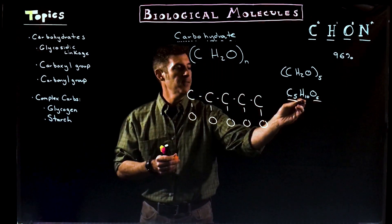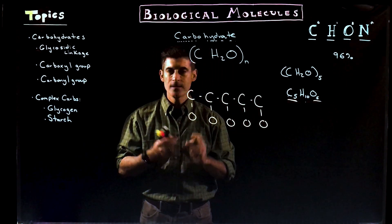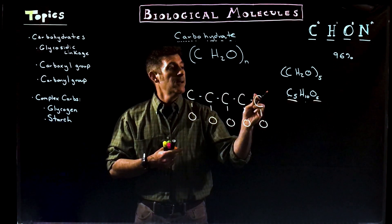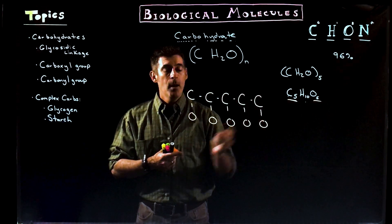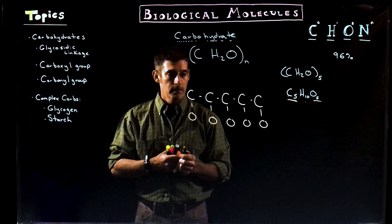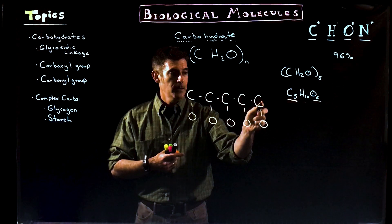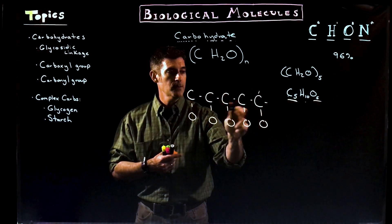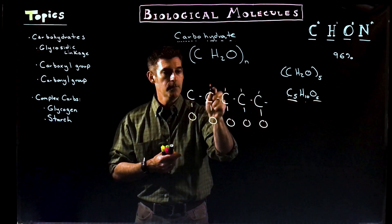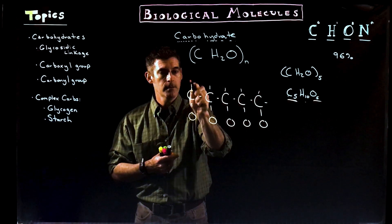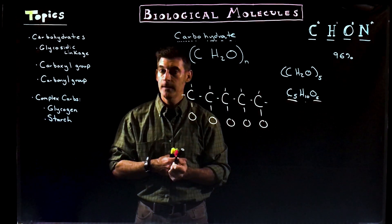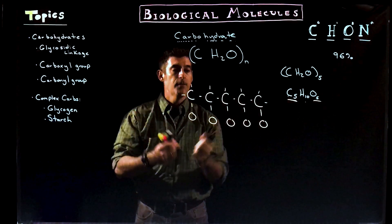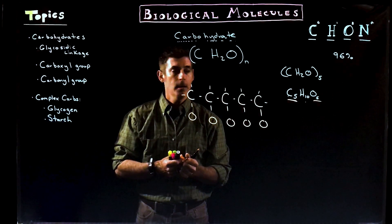So now we have the hydrogens, and the other thing we want to keep in mind is how many bonds can certain elements hold. Carbons typically have 4 bonds. So for the end carbon that already has 3 bonds, there's a 4th available. That accounts for the 4 bonds for all the carbons.